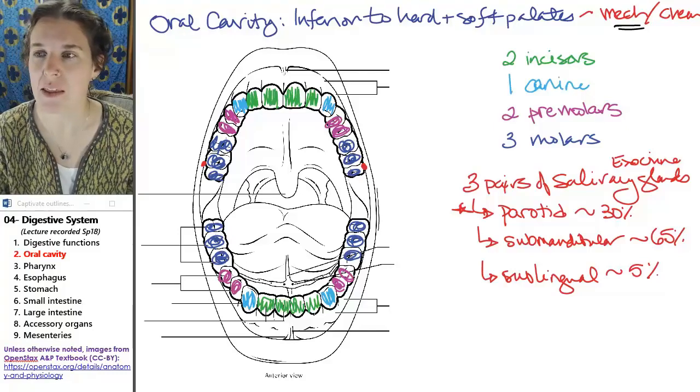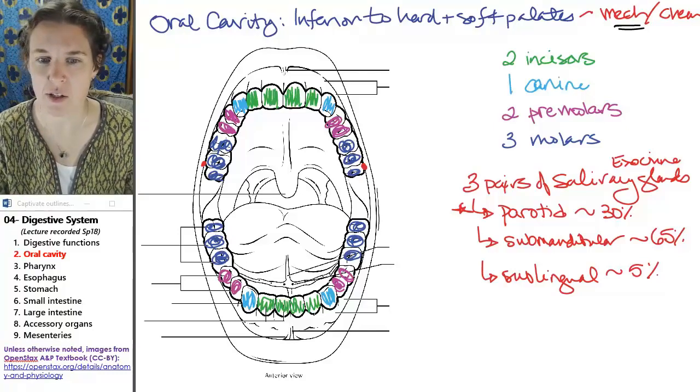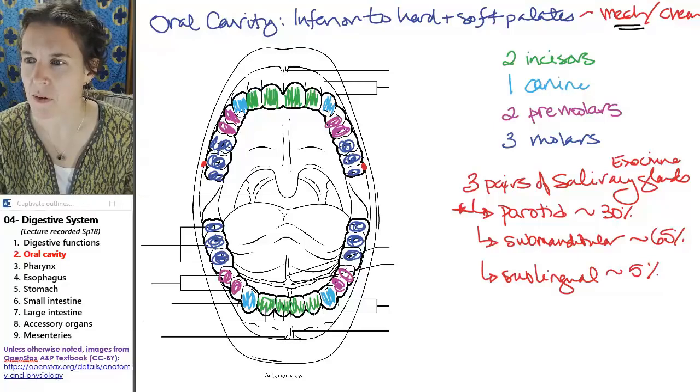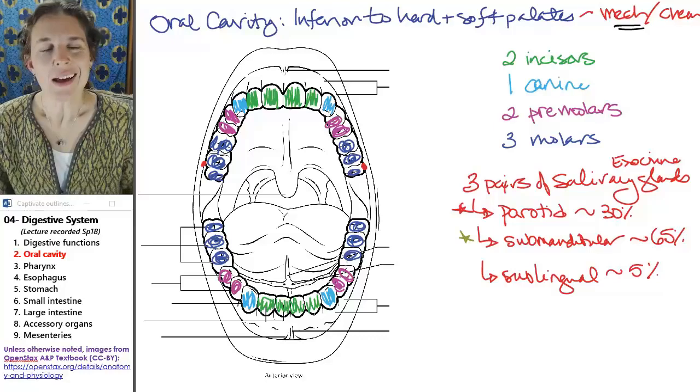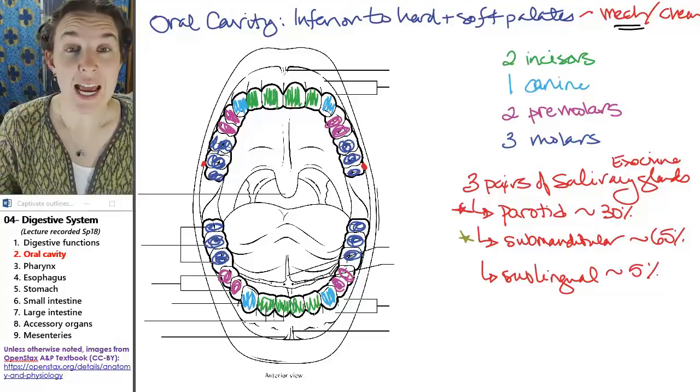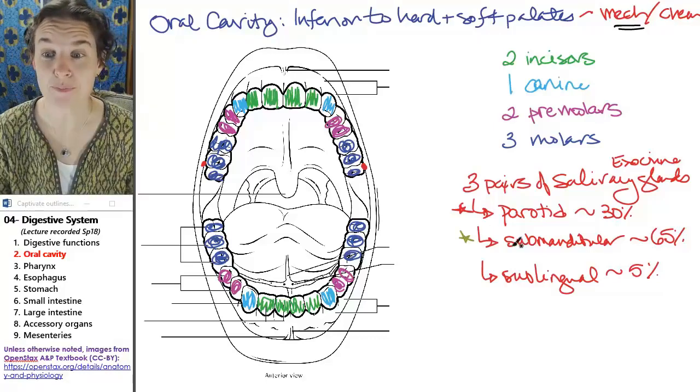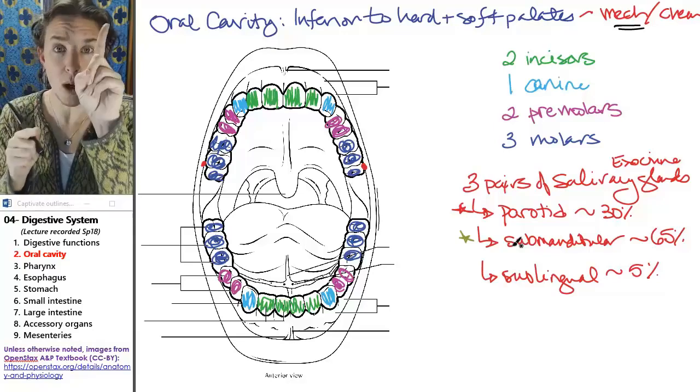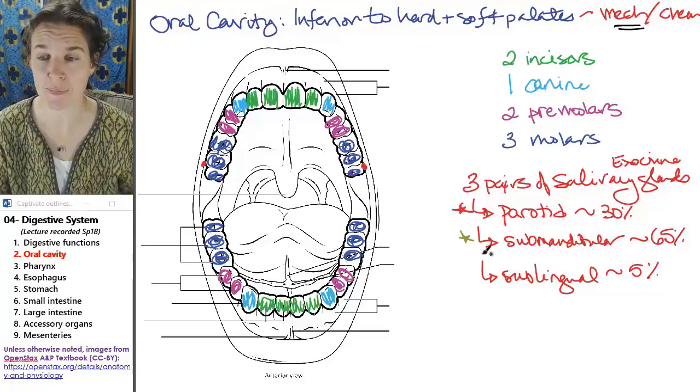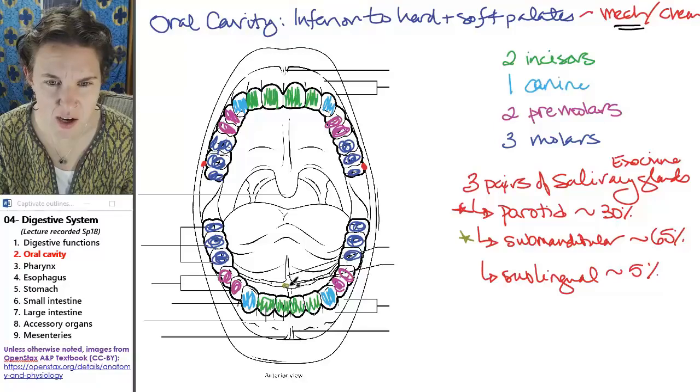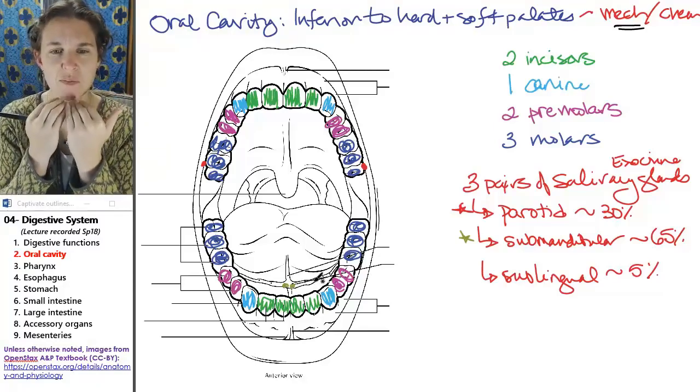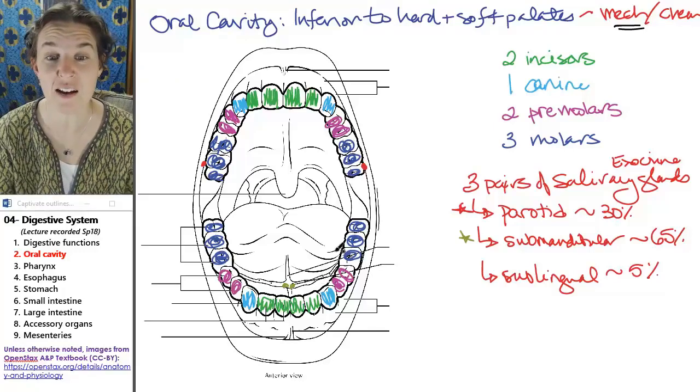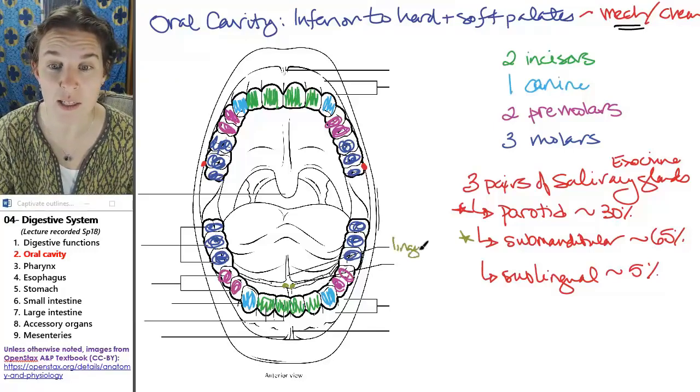Submandibular, this gland, let's see. Let's do it, oh gosh, what color should it be? Submandibular gland has two ducts, one duct per gland. And the ducts are found underneath the tongue on either side of the lingual frenulum, lingual frenulum.